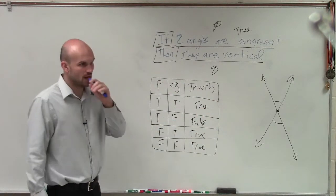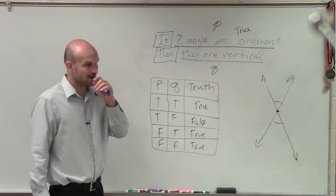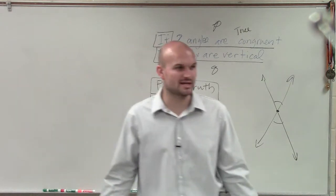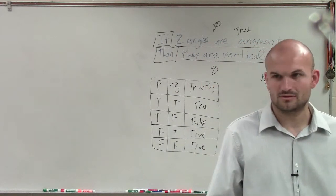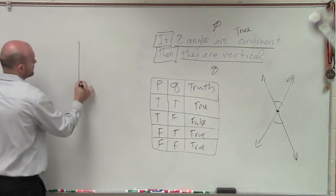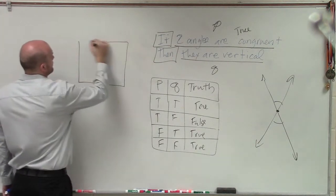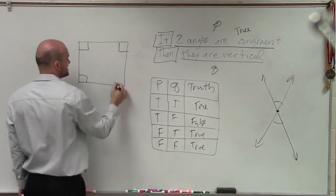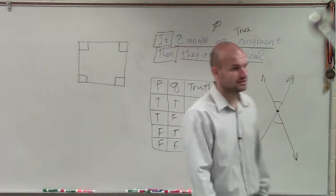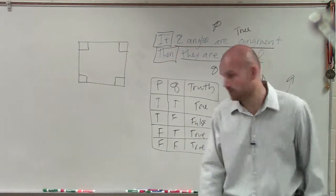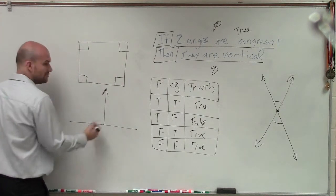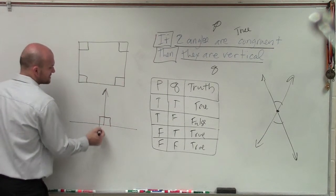Does anybody have an example of two angles that are congruent that are not vertical? How about a box? A box has four 90-degree angles. Are all those angles congruent to each other? Are any of them vertical? No. What about supplementary angles? Congruent means they're going to be the exact same size and shape — the exact same measure.